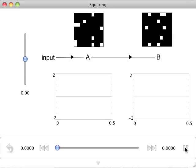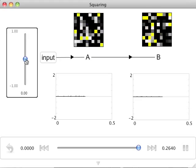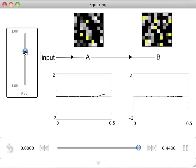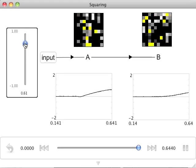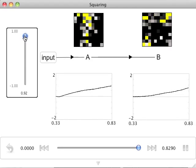This is evident when we run the network. As I slowly sweep the input from 0 to 1, we can see that the value in population A increases much more rapidly than in B.